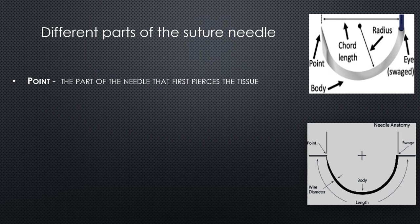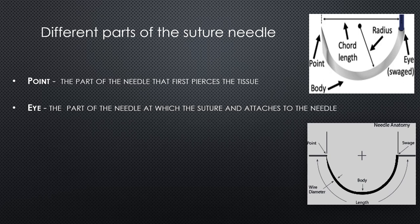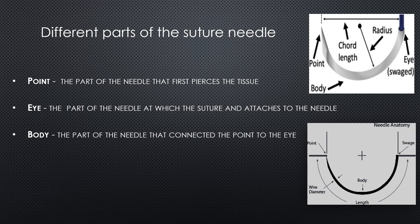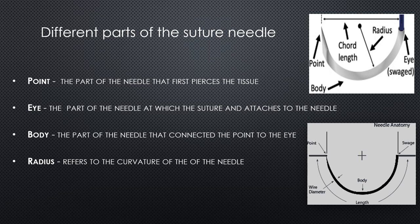The first is the needle point — that's the part of the needle that pierces the tissue, essentially the pokey part. Next is the eye of the needle, which is where the suture and the needle attach to each other; this is also referred to as the swaged end, or sometimes called the butt of the needle because it's at the end. The body of the suture needle connects the eye to the point. The needle radius is relevant in curved needles — imagine the needle completing a full circle; the distance from the center of that circle to the body of the needle is the radius.